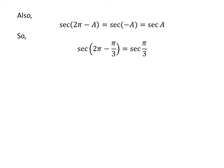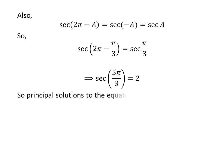Applying the above identity implies that secant of 2π minus π/3 is equal to secant of π/3. As 2π minus π/3 is equal to 5π/3, so secant of 5π/3 is equal to 2. Therefore, the solutions to the equation secant of x is equal to 2 in the interval 0 to 2π are π/3 and 5π/3.